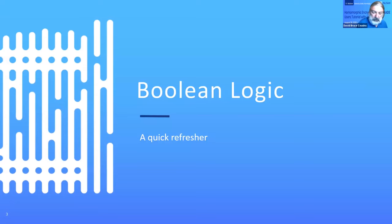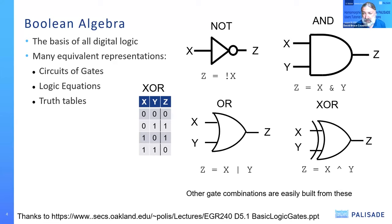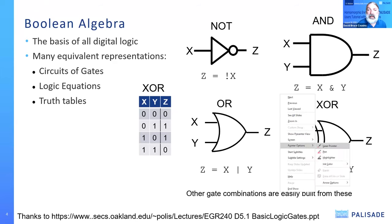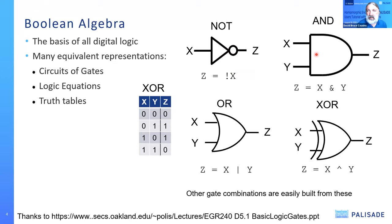A quick refresher on Boolean logic. Boolean logic is taught in almost every electrical engineering and computer science curriculum — it's the basis of all digital logic. There are many equivalent representations. We have circuits of gates: the NOT gate, the AND gate, the OR, and the XOR. Other gates are built from combinations of these, such as negating the output of an AND to get a NAND, or similarly a NOR. We also have gates where one input is negated and the other isn't — but they all are built fundamentally on a small number of gates.